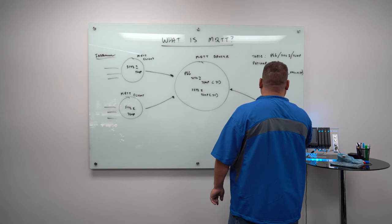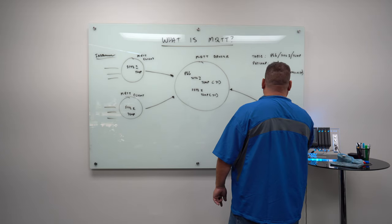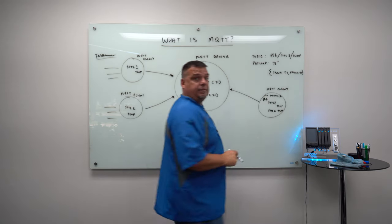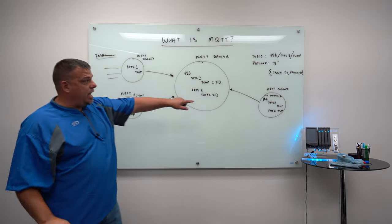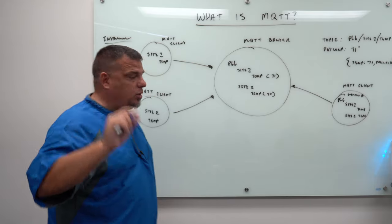Here's what I'm going to see on this client. P66, site one, temp and site two, temp. As this value changes, I will be updated. My client out here will be updated. Let me show you one more thing.